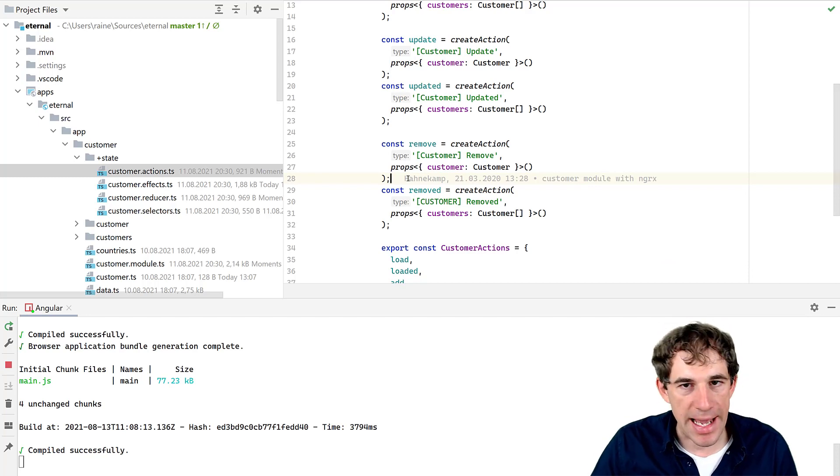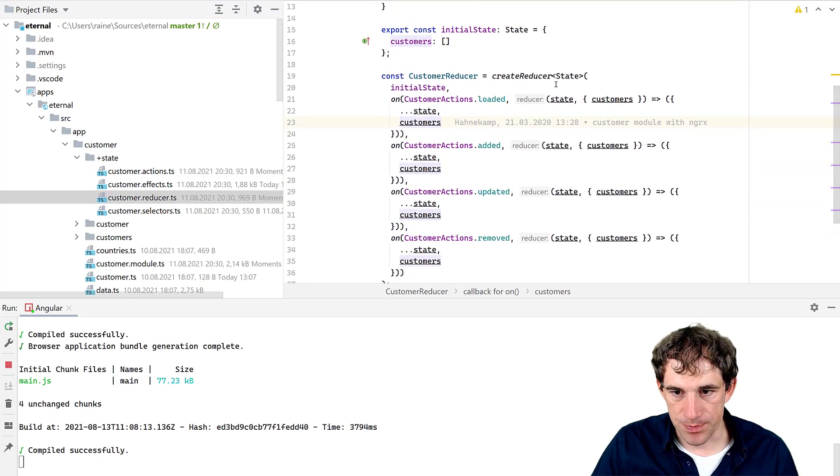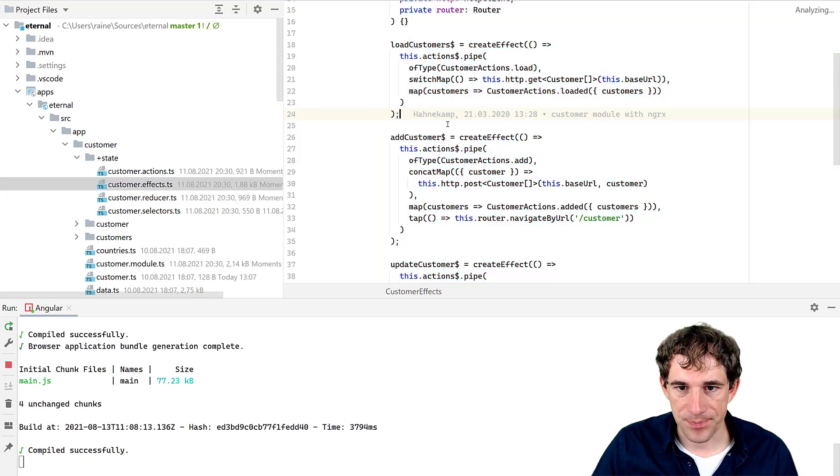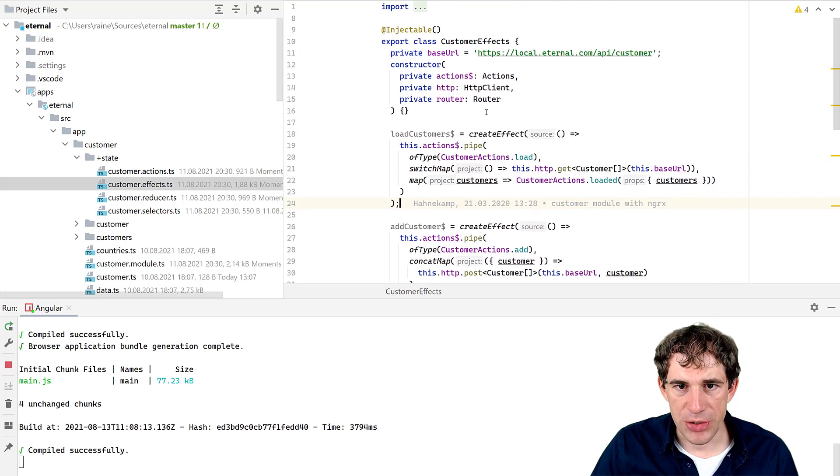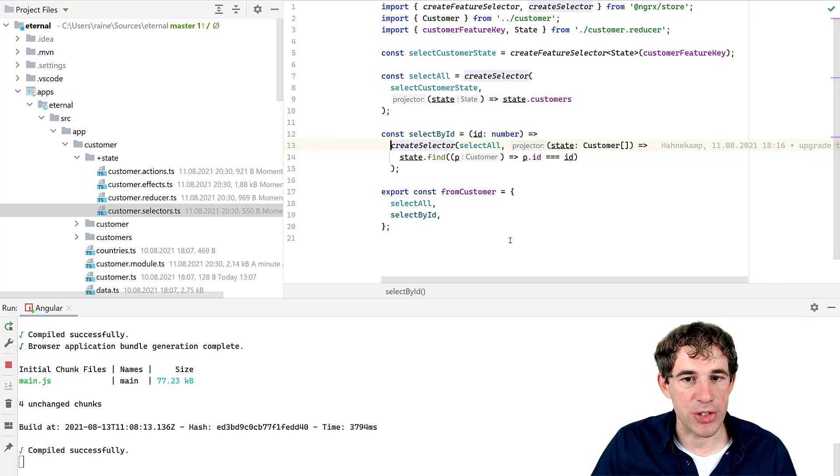And since this is a CRUD application, we have for each possible operation. So listing, updating, adding and deleting a separate action. This action is of course then also processed in the reducer. And when it comes to the communication with the backend, we have our effect, which is doing that as well. Of course, selectors for our components is also something which is very important.